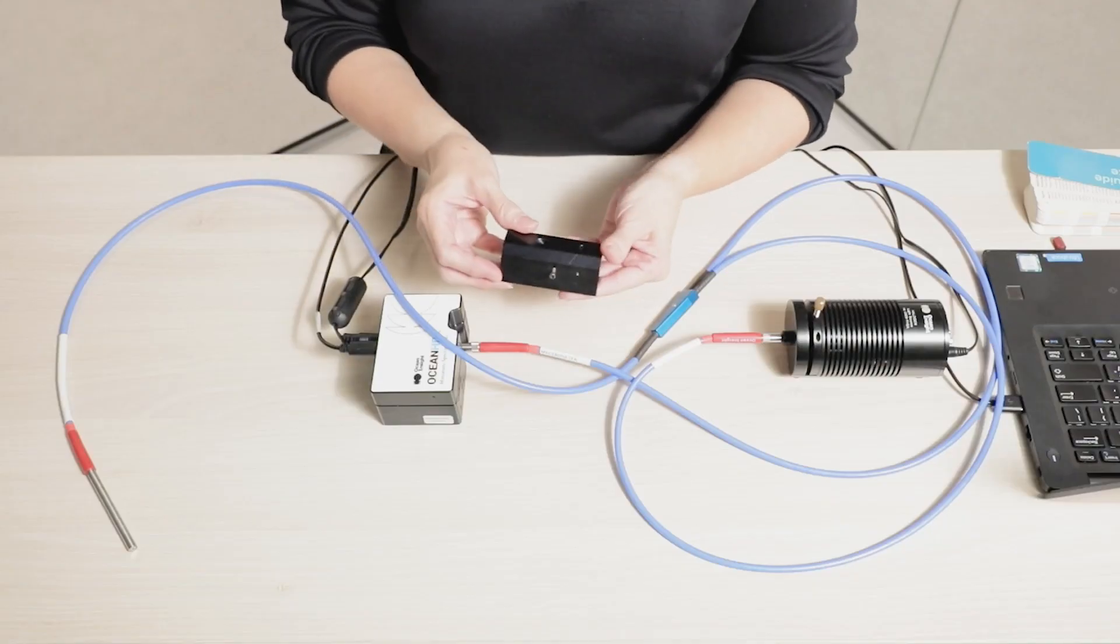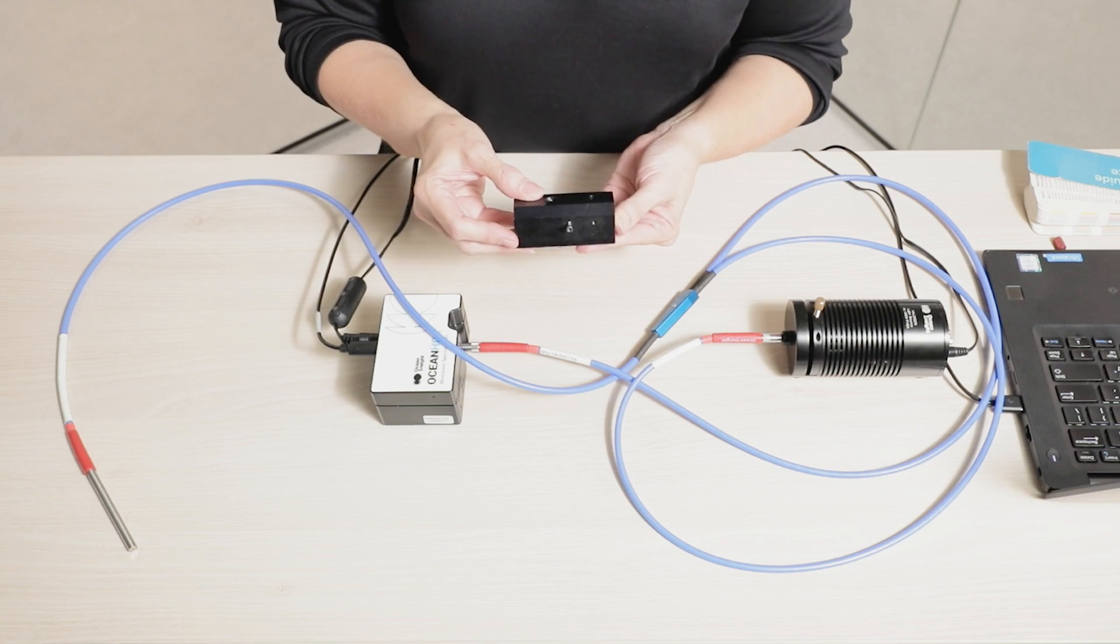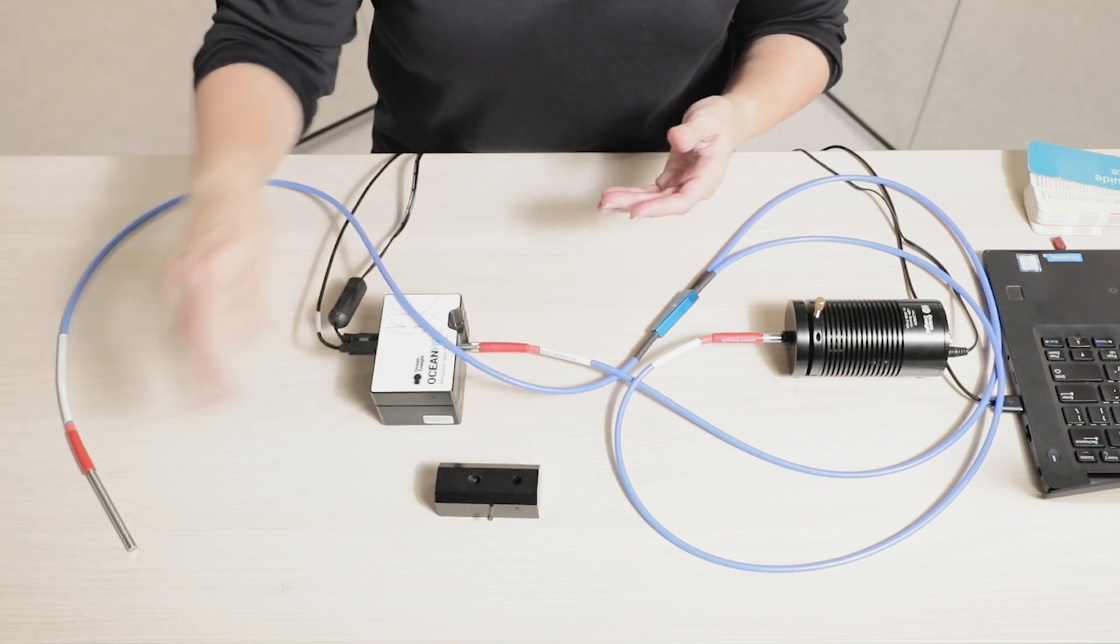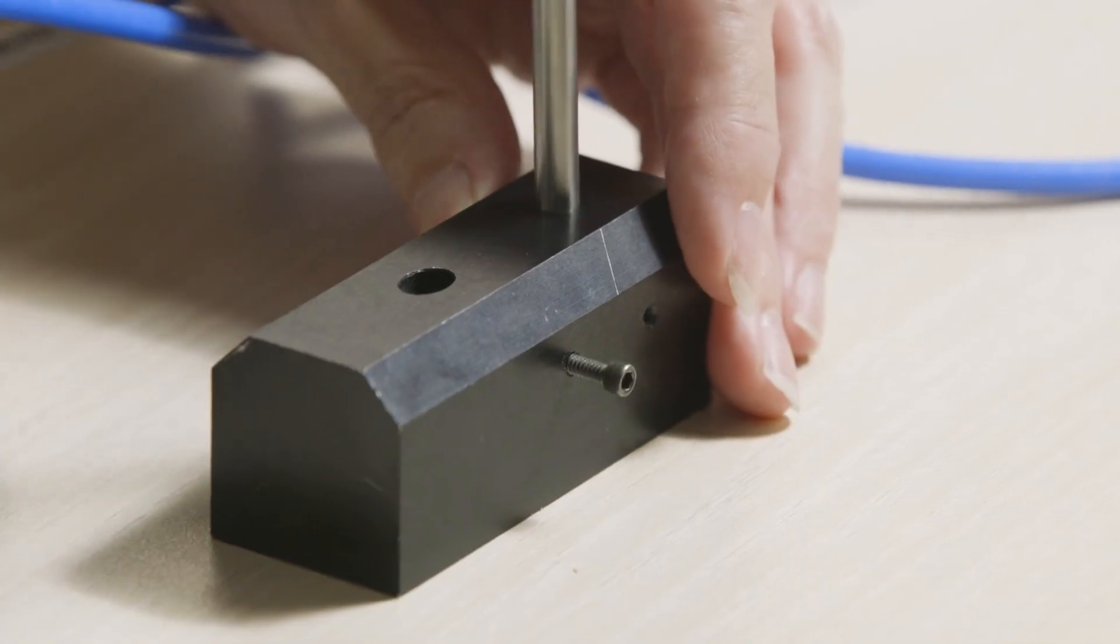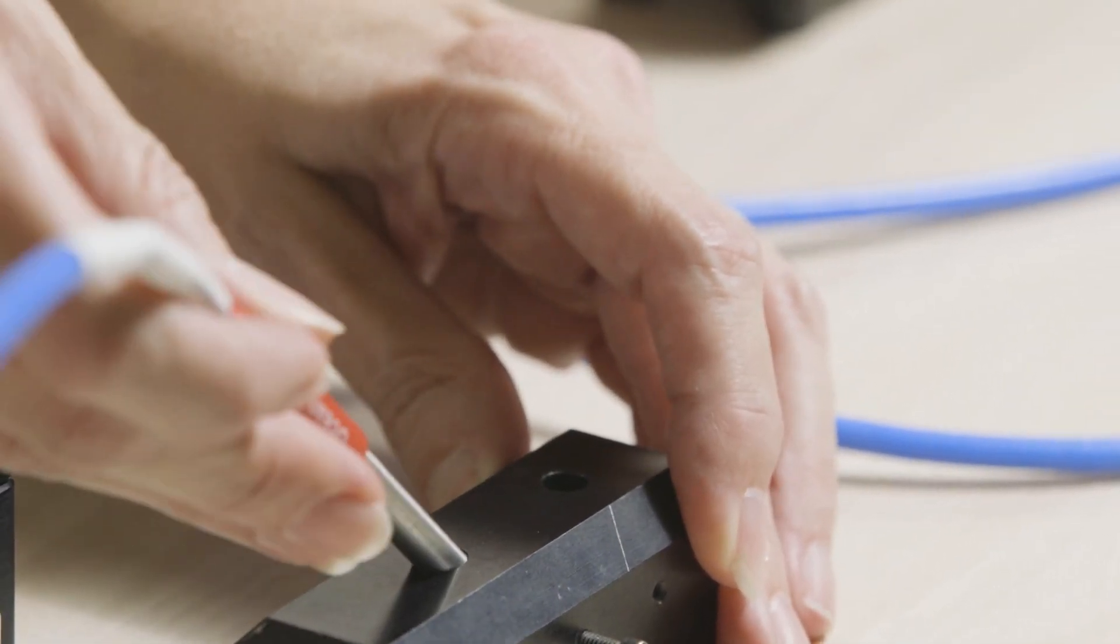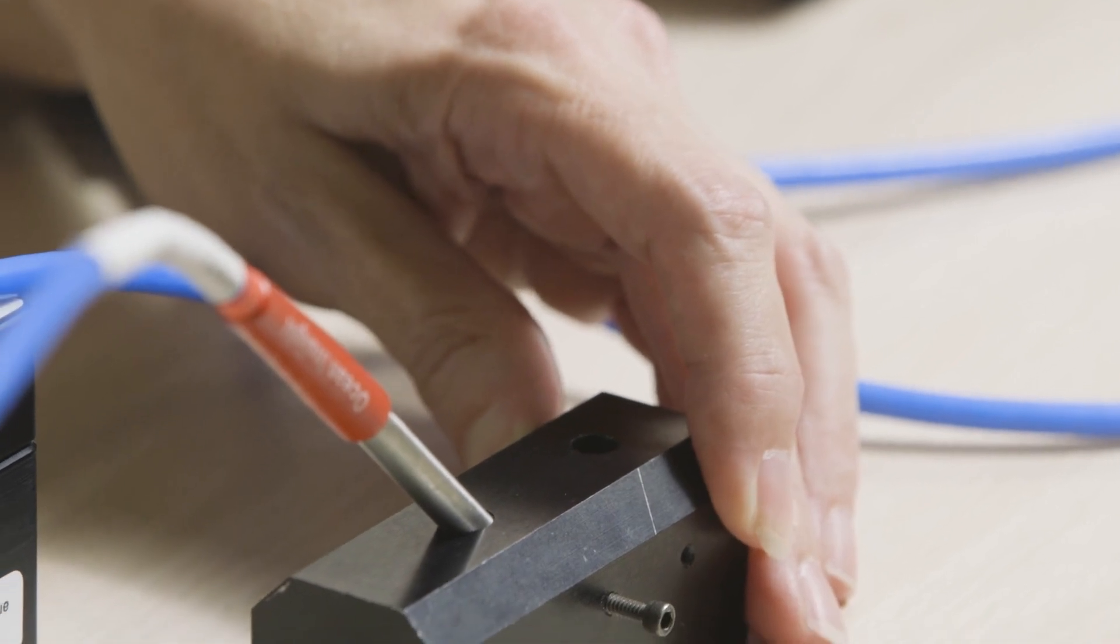We can then use a sampling accessory like our RPH-1 reflection probe holder to enable us to make either specular measurements, where we're looking at reflection at 90 degrees, or diffuse measurements, which we're looking at reflection at 45 degrees.